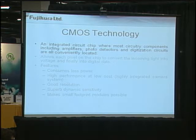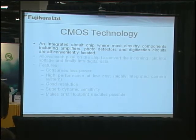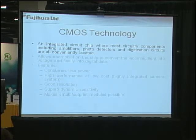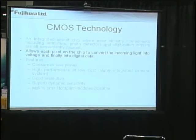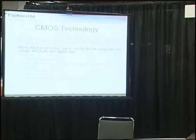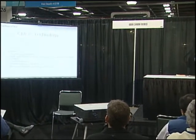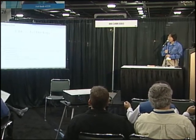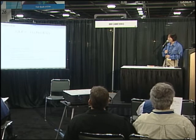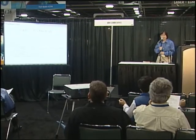The CMOS technology is basically IC chip circuitry — integrated circuitry components, as well as photodetectors and digitalized circuits, all assembled into one chip. Based on the CMOS chip, it allows each pixel on the chip to convert incoming light into voltage and finally into digital data. Compared to CCD camera technology and fiber optic technologies, CMOS technology consumes less power and can achieve high performance at low cost. It can have good resolution with very dynamic sensitivity, and it can be made very, very small.